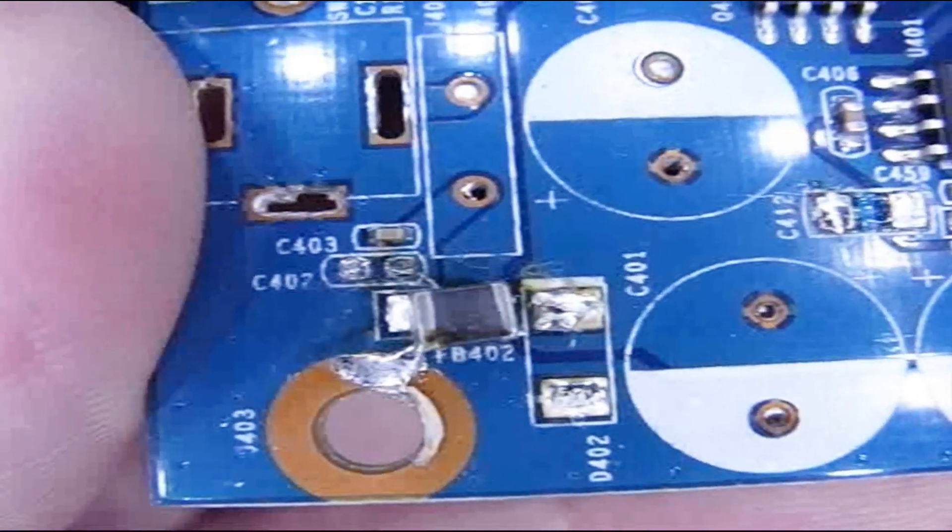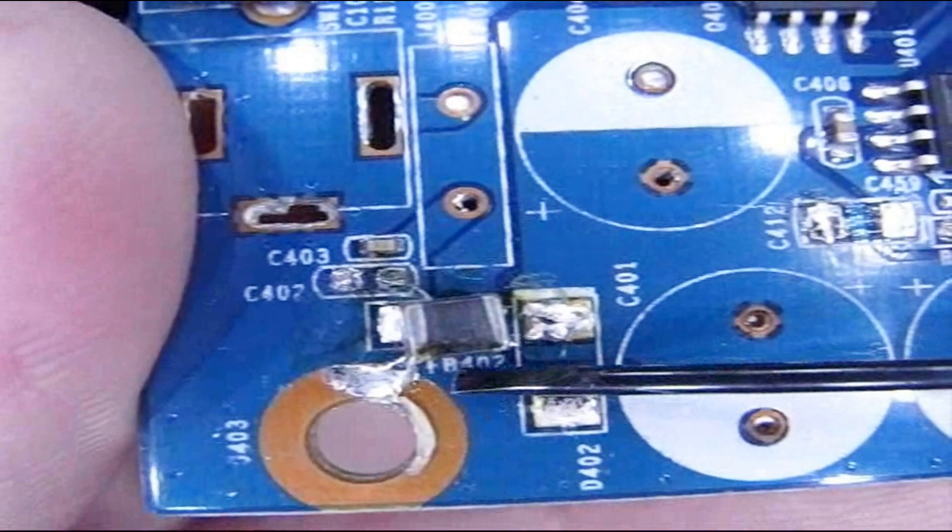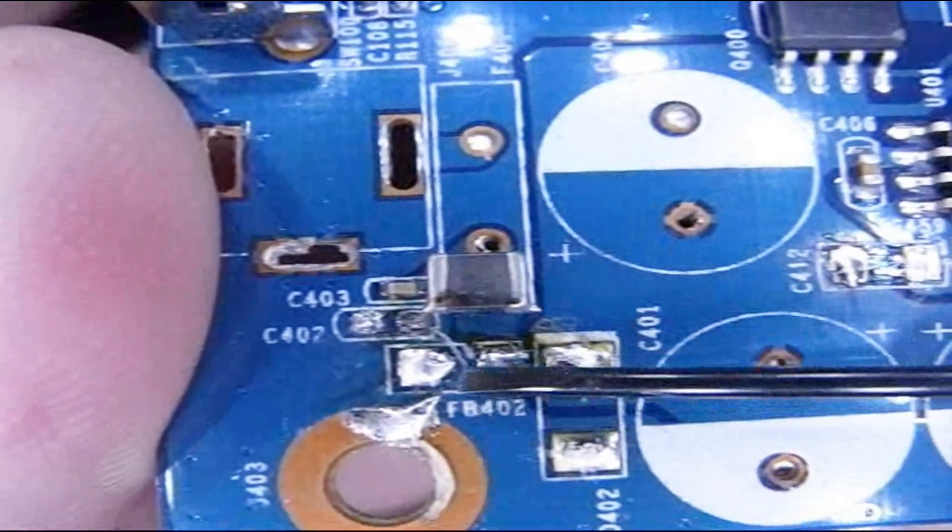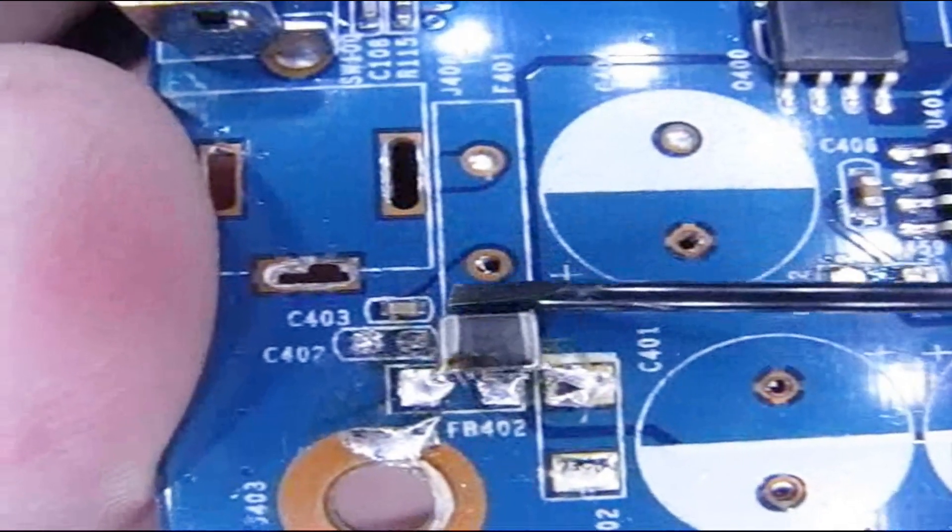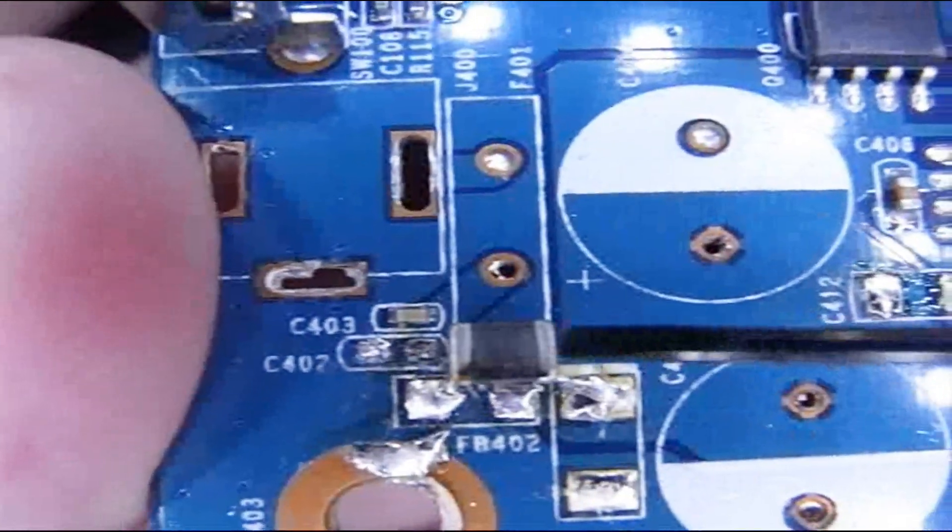Here's where I took one out. You can see it's labeled FB402 and I've got it sitting back on there but I desoldered it and that's what it looks like sitting there. Just an inductor.